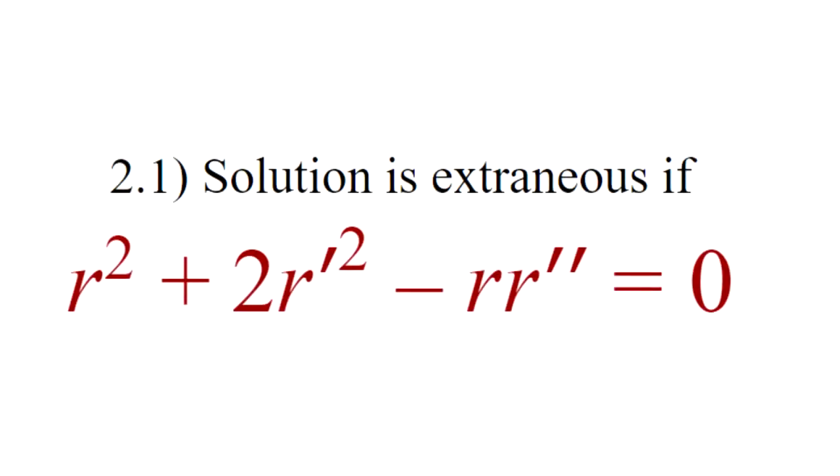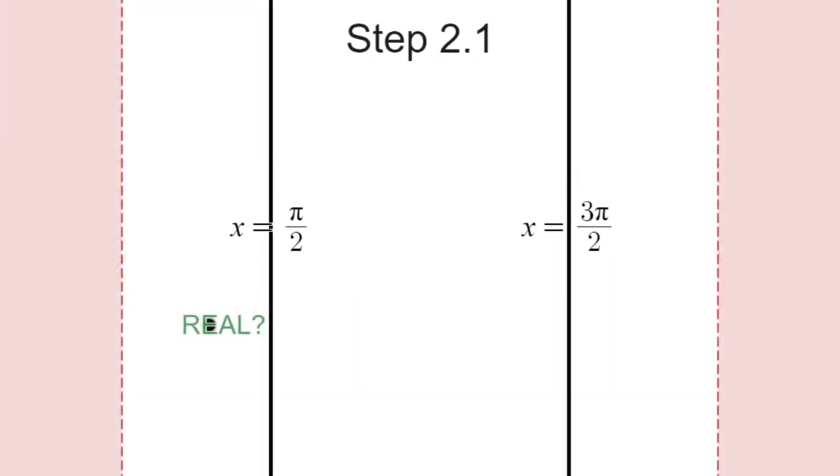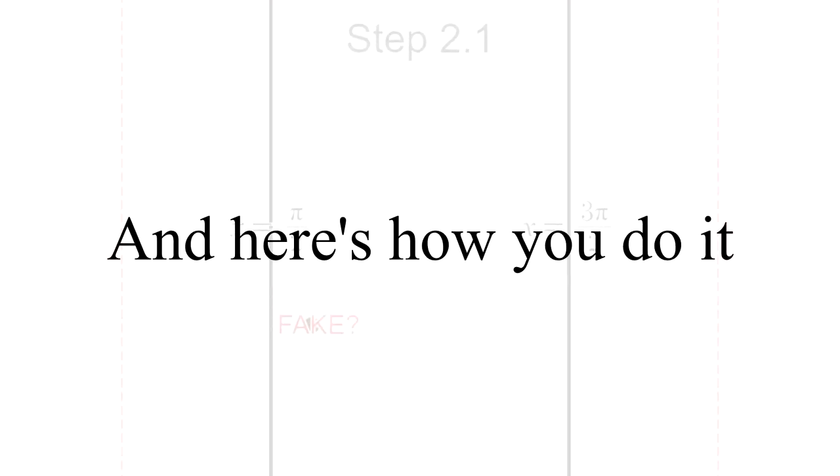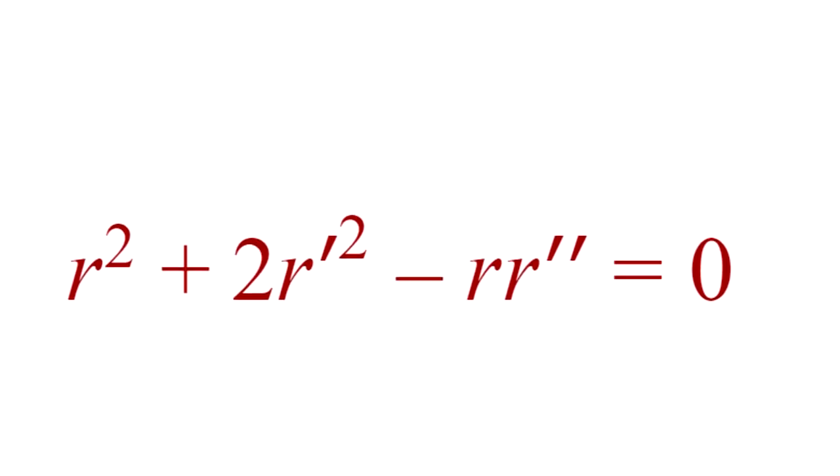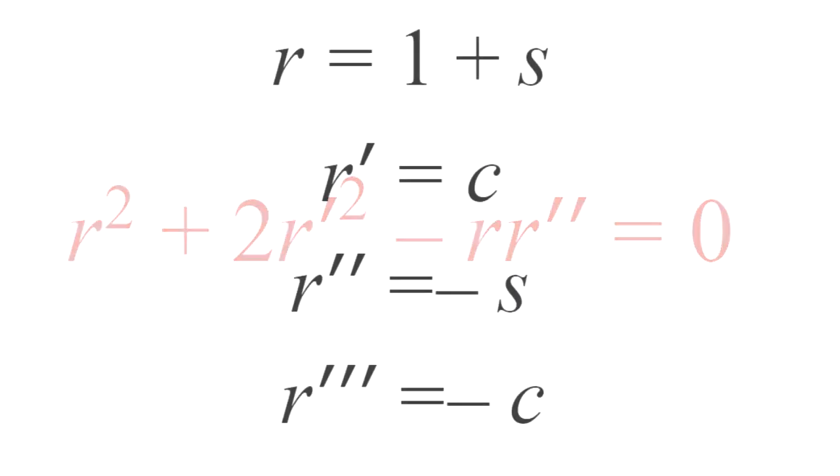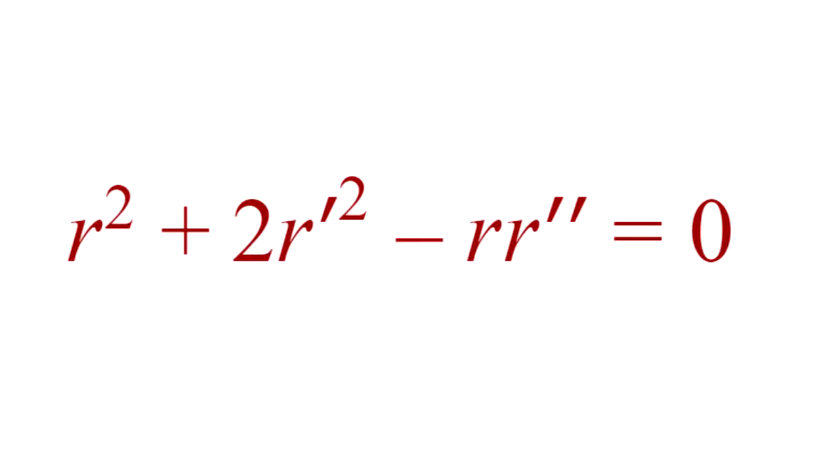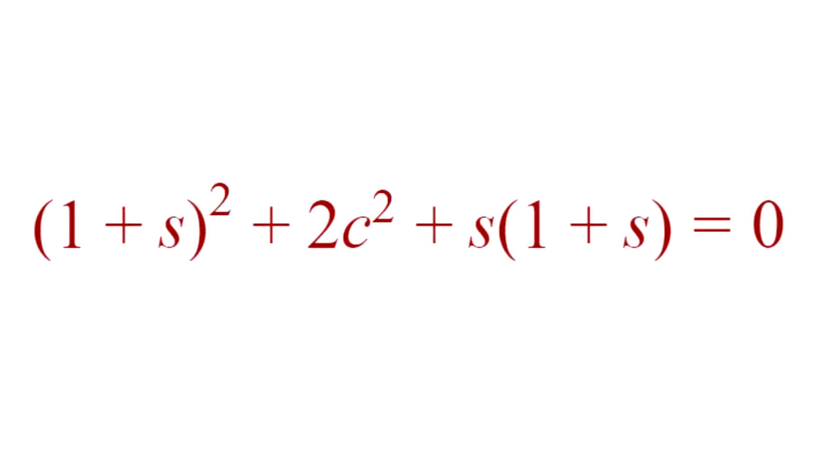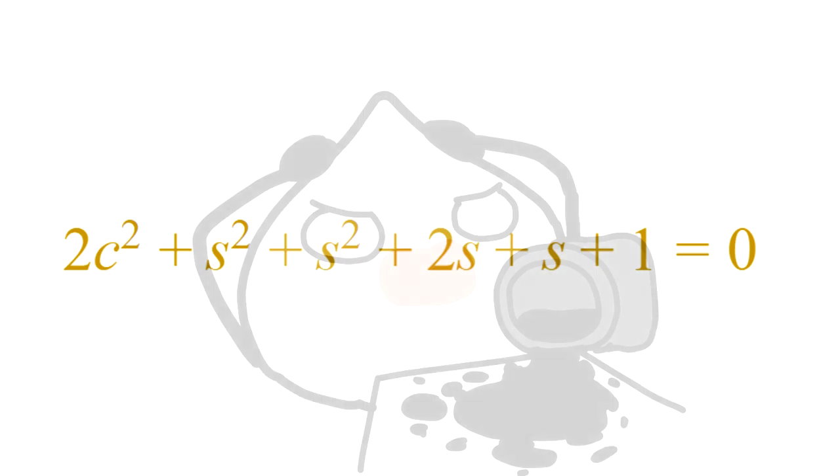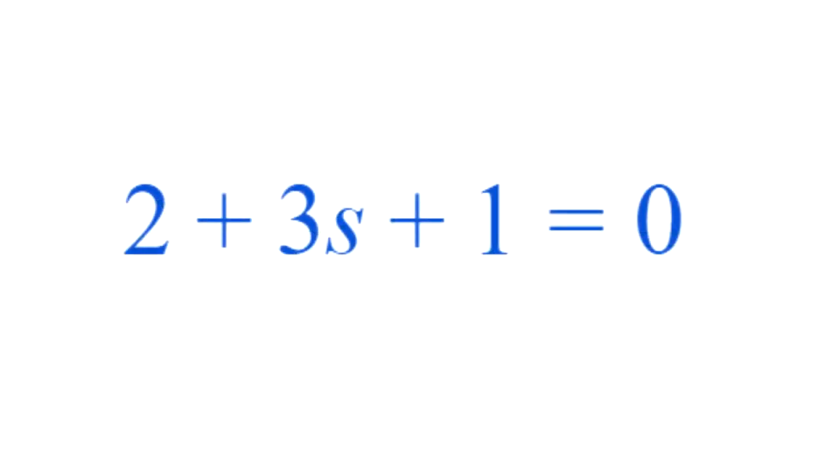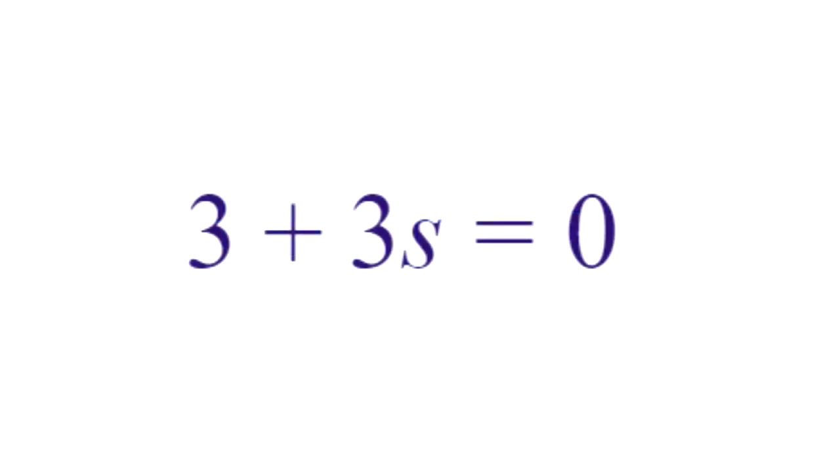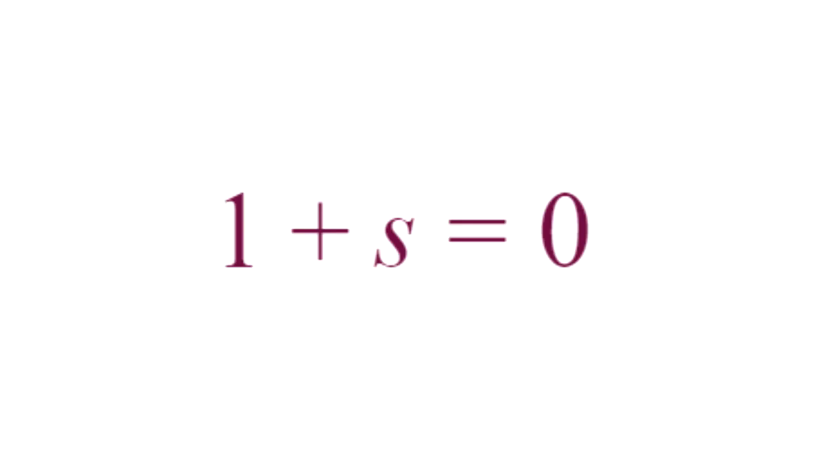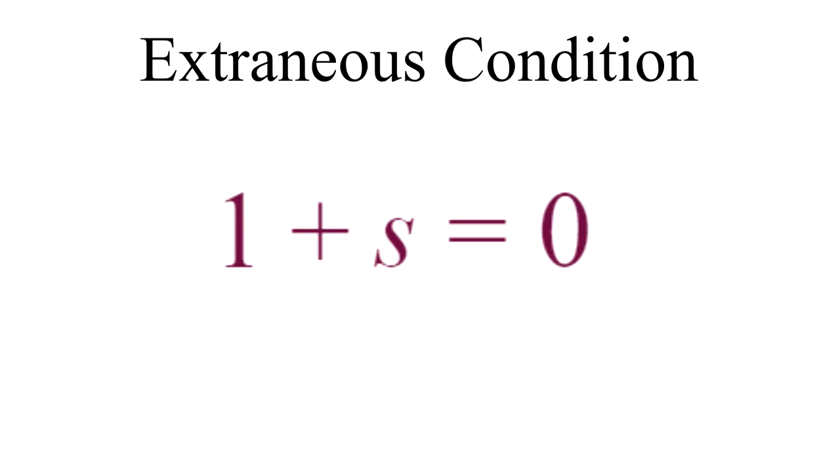Alright, now let's talk about the new step 2.1. The purpose of this step is to check whether a solution is extraneous or not, and here's how you do it. First thing we have to do is rewrite this condition equation with the derivatives we have. Doing so will result to this. After spilling much ink to my paper, this equation will simplify to 1 plus s equals 0, which represents the extraneous condition.